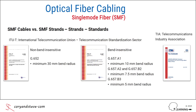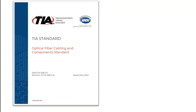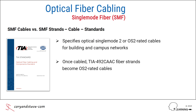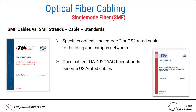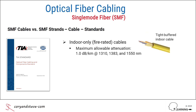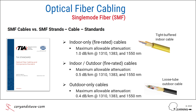Let's now move on to single-mode fiber cable standards. The TIA-568.3 standard, currently in Edition E, specifies the use of optical single-mode 2 or OS2-rated cables for building and campus networks. The fiber strands within these cables are specified in TIA-492 CAAC, as described previously. The optical loss or attenuation performance of an OS2-rated cable depends on its construction. Tight-buffered indoor cables have higher allowable losses than loose-tube outdoor cables, with indoor-outdoor cables somewhere in between.